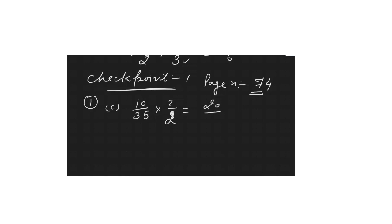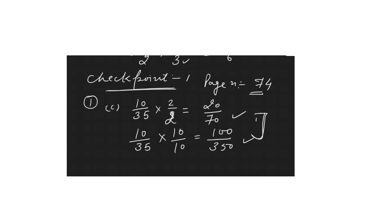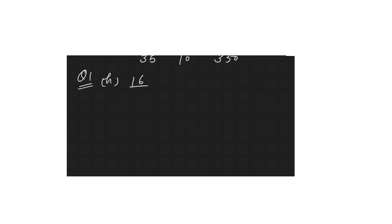So, 10/35 multiplied by 2 gives 20/70 — this is the first equivalent fraction. If you multiply by 10: 10×10 = 100 and 35×10 = 350, giving 100/350. These are two equivalent fractions of 10/35. One more example: question one, part h — 16/30.